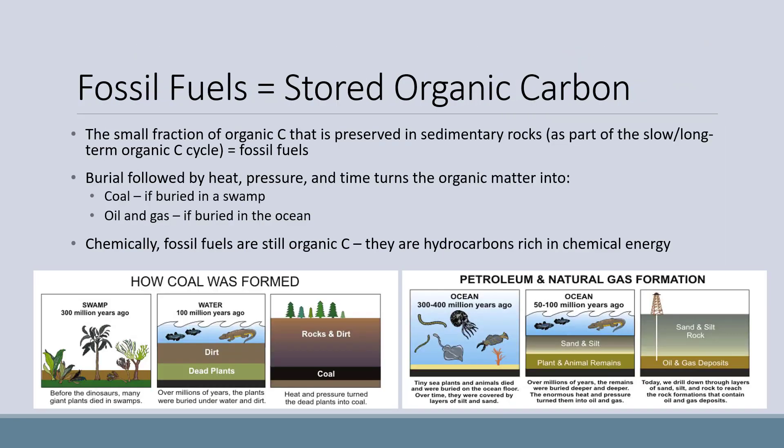We've mentioned fossil fuels, so let's define them now and how they fit into the long and also the short carbon cycles. Fossil fuels are just stored organic carbon — stored in sedimentary rocks. When organic matter is buried and subjected to heat and pressure for a long enough period of time, the organic matter will turn into either coal or oil and gas. I have cartoon strips that show the processes for coal formation and oil and natural gas formation. While the mechanism is the same — heat, pressure, and time — the location and sources are different.